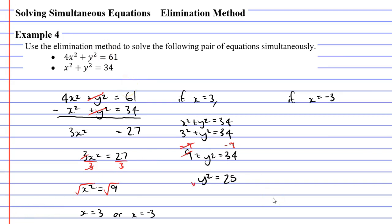Now, when I square root both sides, I'm going to get y = 5. It can also equal -5, because if I square -5, -5 times -5 also equals positive 25.